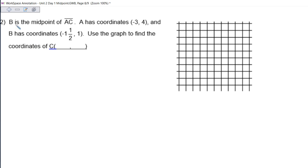Our next one. B is the midpoint of segment AC. A has coordinates of negative 3, 4, and B has coordinates of negative 1 and a half, 1. Use the graph to find the coordinates of point C. Because this is a mixed number, I am actually going to use the graph because I think it's the easier way for this problem. You can use algebra or the other method that I showed you to show your work.